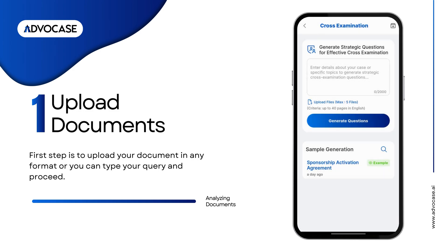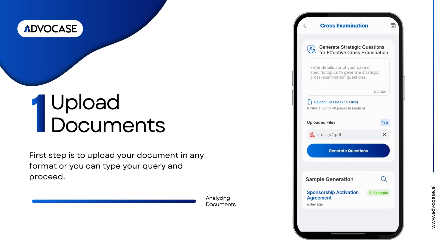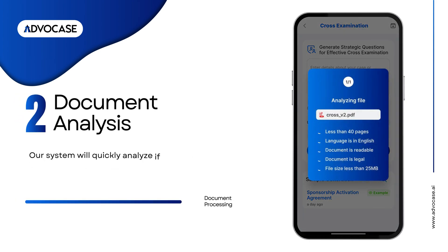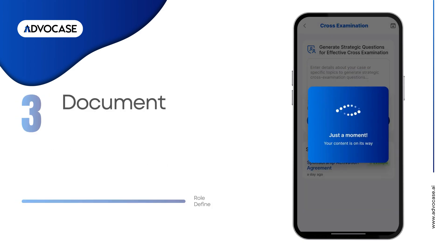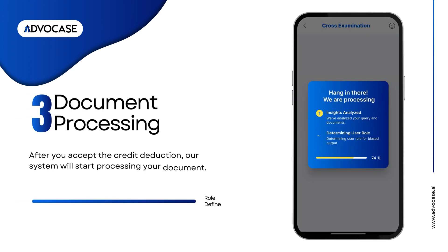The first step is to upload your document in any format and proceed. Our AI system will quickly check if the file is safe and meets the required conditions. After you accept the credit deduction, our system will start processing your document.